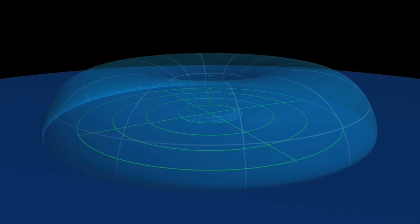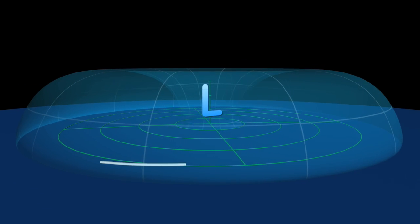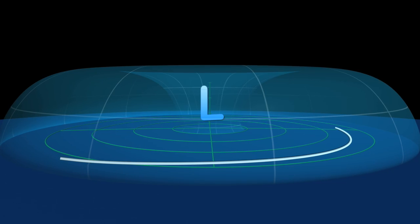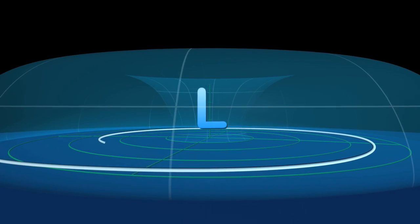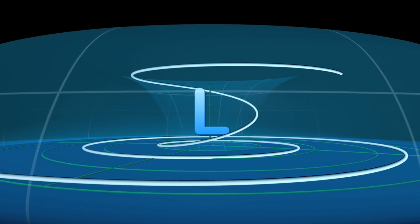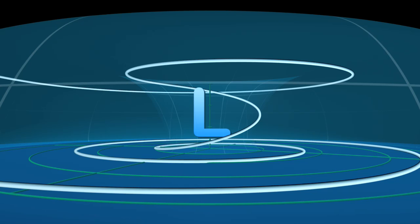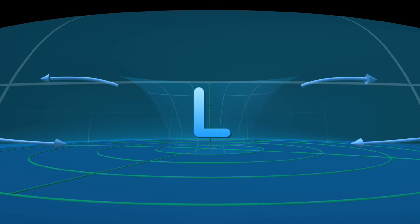A hurricane's eye is an intense low-pressure system. Near the ocean's surface, air spirals inward in an attempt to fill the low-pressure region. As air nears the eye, it rises rapidly until forced outward at the barrier formed by the warm tropopause. The net effect is a cycle of air moving inward near the ocean's surface, upward at the eyewall, and outward at high altitudes.